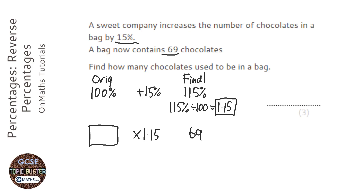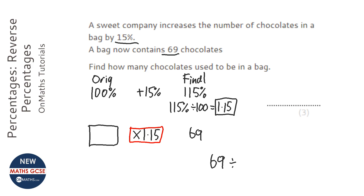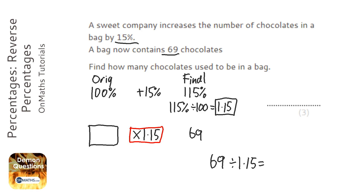But we're given the final amount and we're trying to go backwards, so what we want to do is the inverse of this. The inverse is to divide by 1.15 to find out what the original was.